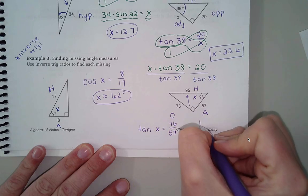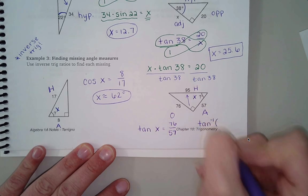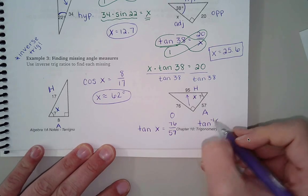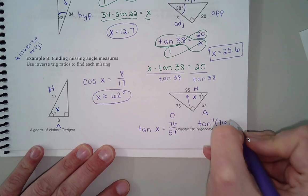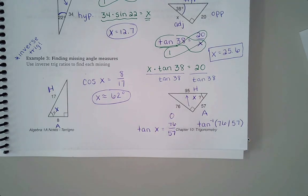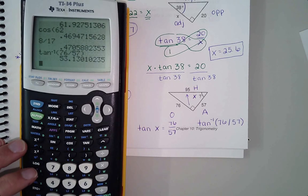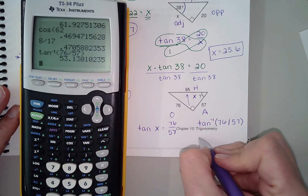And then what I'm typing into my calculator is this right here. Inverse tan, that's the tan with the little negative one of 76 divided by 57. And so I'm asking the calculator, what angle has this tangent? I should show you what I'm typing in. 76 divided by 57, about 53 degrees.